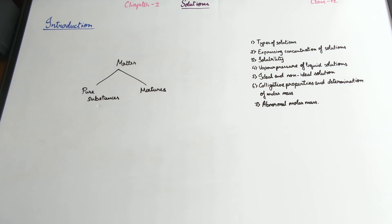Ideal and non-ideal solutions. If you remember, vapor pressure was something that you learned in class 11, and so was ideal and non-ideal gases. But here, we're going to be talking about ideal and non-ideal solutions. And then we have this unique new property called colligative properties and determination of molar mass and abnormal molar mass.